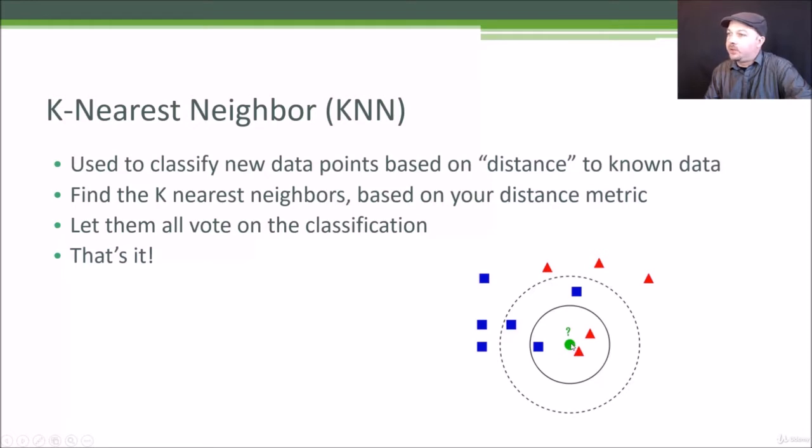Let's say a new point comes in, a new movie, that we don't know the genre for. What we could do is say let's set K to three and take the three nearest neighbors to this point on the scatterplot. They can all then vote on the classification.